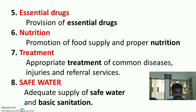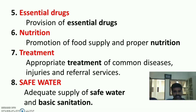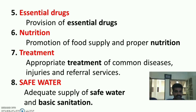The fifth element is Essential drugs — provision and distribution of essential drugs at free of cost. N stands for Nutrition — that is promotion of food supply and proper nutrition. T stands for Treatment — appropriate treatment of common diseases, injuries, and making referral services if necessary. The last element, S, stands for Safe water — adequate supply of safe water and basic sanitation. These are the eight important elements in primary health care.